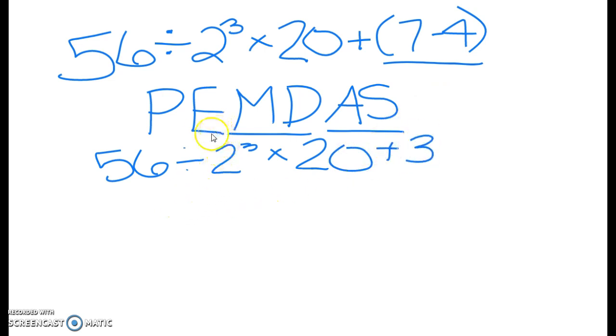Our next step is to do exponents, which we only have one, and that is right here. So we just continue carrying down all the other terms. Two to the third power is eight.